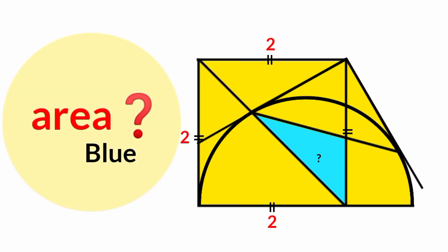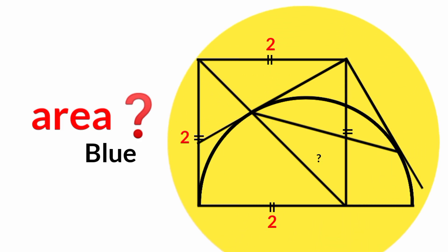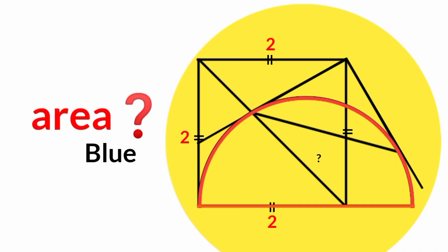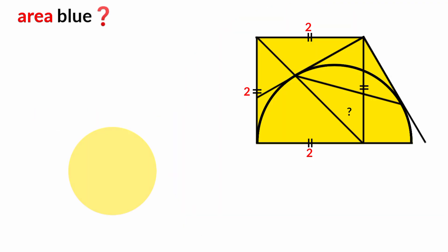Welcome back to another interesting question. We are asked to calculate the area of this blue triangle. In the figure we observe a semicircle and a square-shaped quadrilateral which has sides of length two units each. So how can we solve this and calculate the area of this triangle?